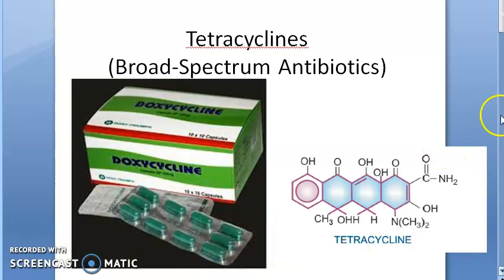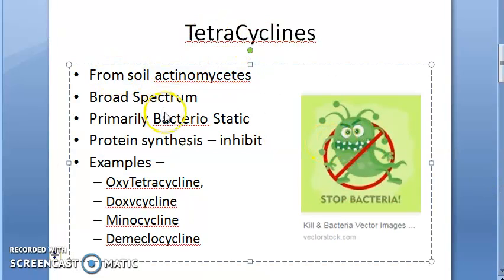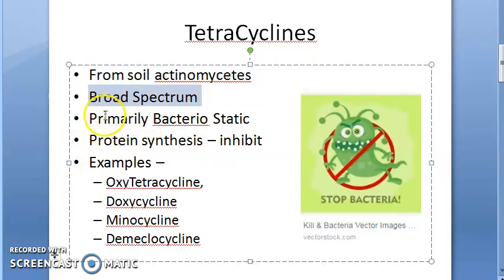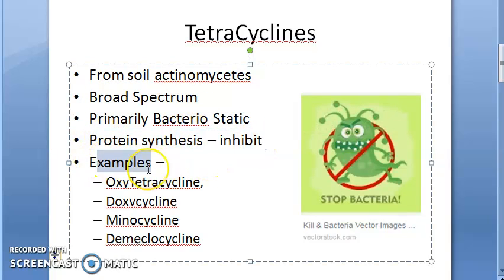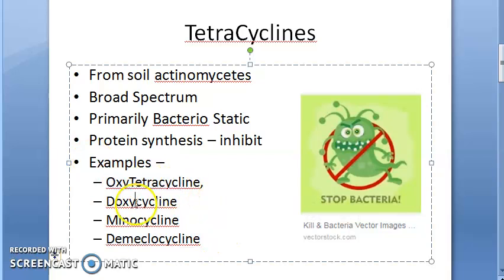It is made from actinomycetes, so it is natural, broad spectrum. It is bacteriostatic — it does protein synthesis inhibition. This much you already know from the previous videos. Examples are oxytetracycline, doxycycline, minocycline, and demeclocycline.